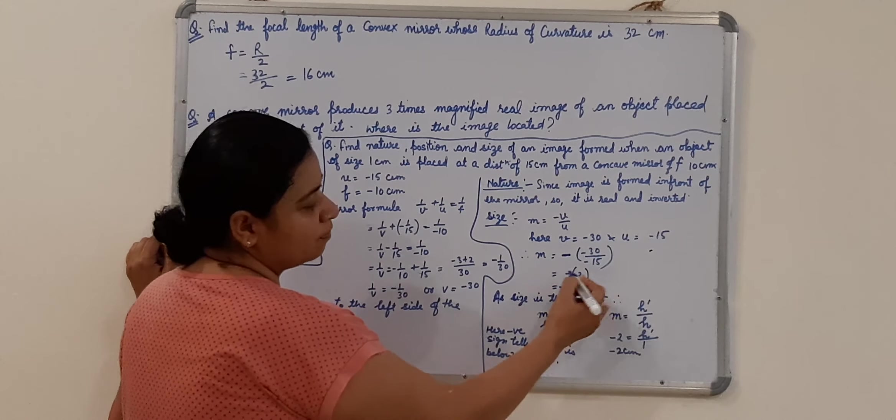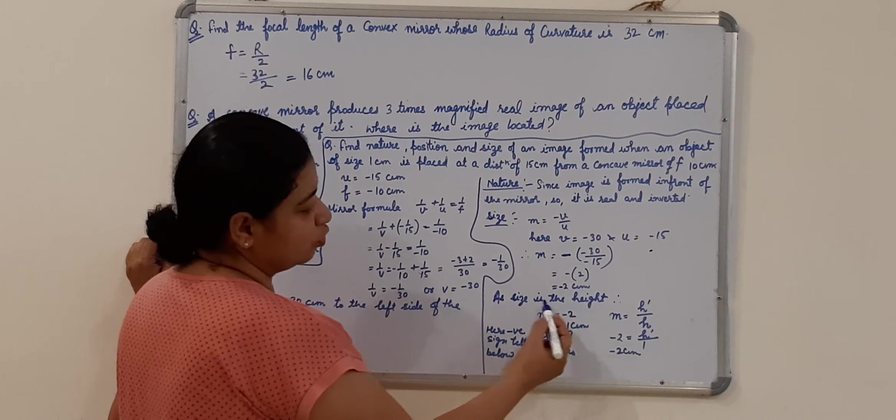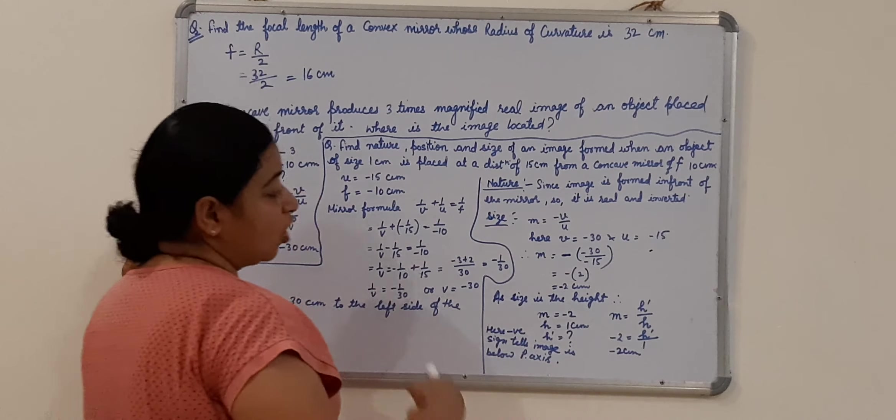Value of V is minus 30. Value of U is minus 50. Now, cancel these. We get 2. When we open the bracket, this positive 2 will be negative 2. As the size. Now, what is our height? We have to find out.